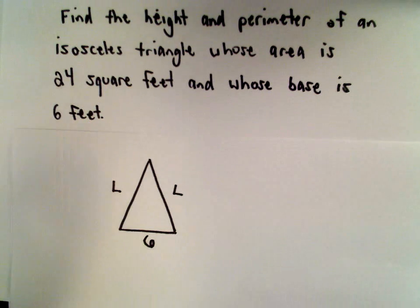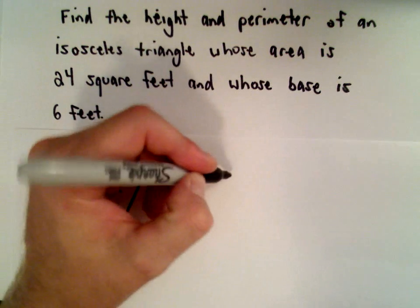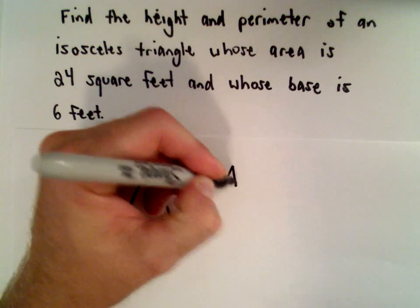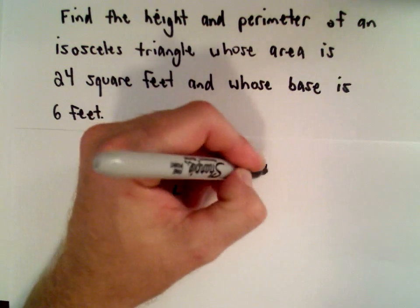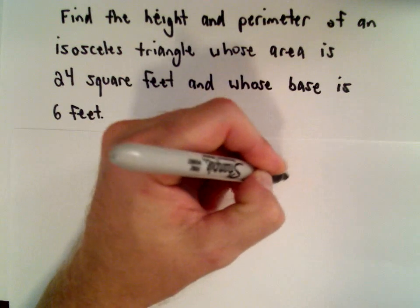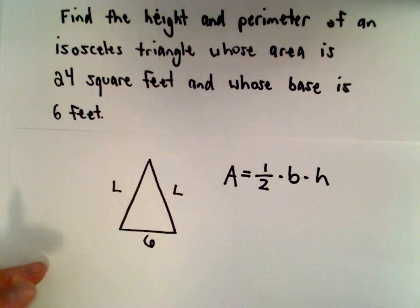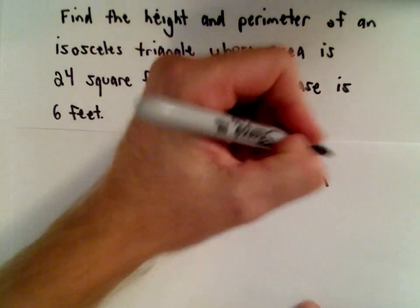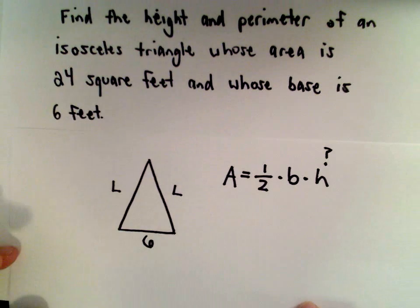Okay, so the first thing I'm going to do is find the height here. So the way that I'm going to do that, recall that the area for a triangle is we take one-half and we multiply that by the base, and then multiply that by the height. So the height, this is what we're trying to figure out here, this value of h.